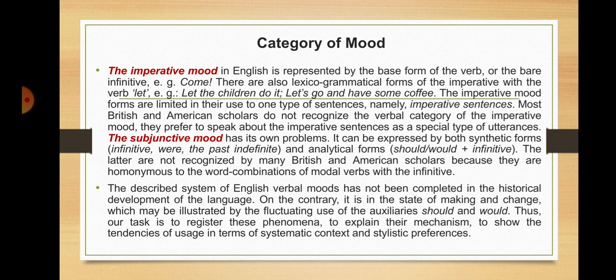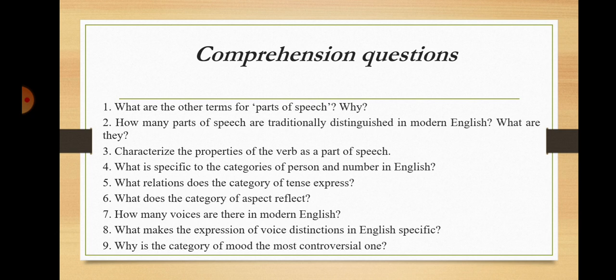The imperative mood forms are limited and used in one type of sentences — imperative sentences. Most British and American scholars do not recognize the verbal category of the imperative mood and prefer to speak about imperative sentences as a special type of utterance. The subjunctive mood has its own problems: it can be expressed by both synthetic forms — infinitive, past indefinite — and analytical forms — should/would plus infinitive. The latter are not recognized by many British and American scholars because they are homonymous to word combinations of modal verbs with the infinitive.